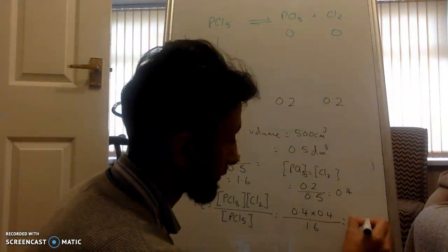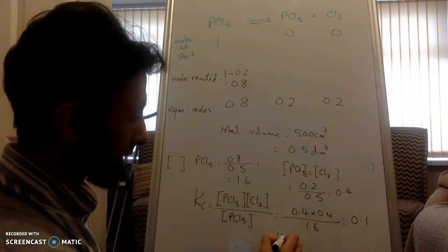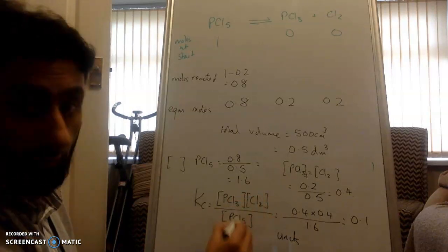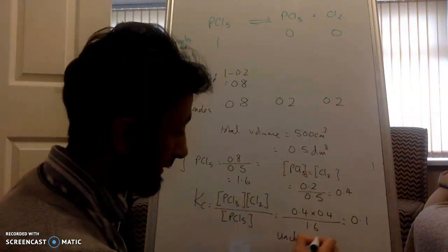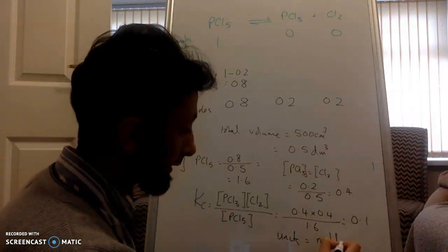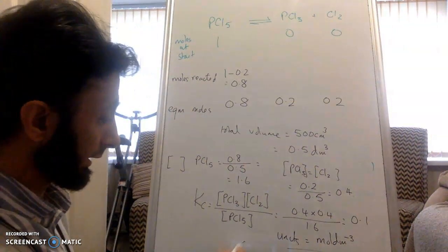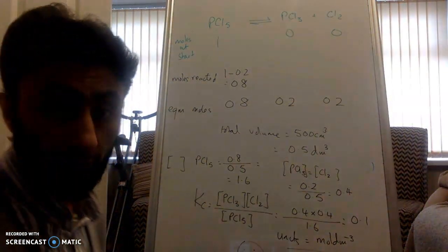Answer is 0.1. What are my units? Well, the units for Cl2 and PCl5 cancel. Remaining units are mol dm cubed. And there you are. Smiley face.